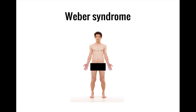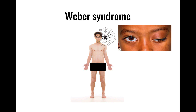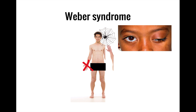To remember Weber syndrome, think about what happens when you're walking and suddenly get a spider web in your eye. You immediately try to close the eye on that side and will likely use your ipsilateral arm to swipe the spider web away, meaning the contralateral side stays still, almost as if it's paralyzed. Close your eye and use your ipsilateral arm to swipe the spider web away while keeping your contralateral arm paralyzed — that's Weber syndrome.